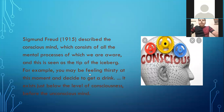Sigmund Freud in 1915 described the conscious mind as consisting of all the mental processes of which we are aware, and this is seen as the tip of the iceberg — the same iceberg we saw in the levels of mind. For example, you may be feeling thirsty at this moment and decide to get a drink. It exists just below the level of consciousness before the unconscious mind.